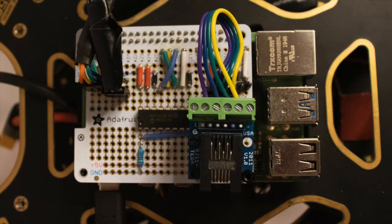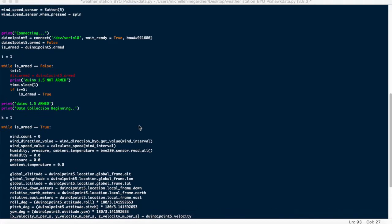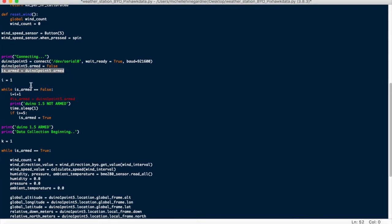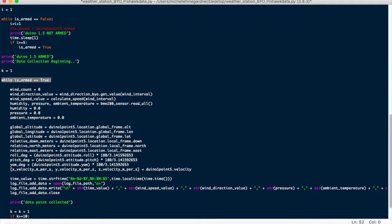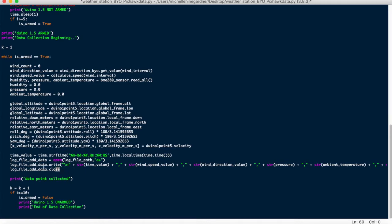This includes location, attitude, and armed or disarmed status. The armed state is used to initiate data collection. The location and attitude states are recorded with each weather measurement.